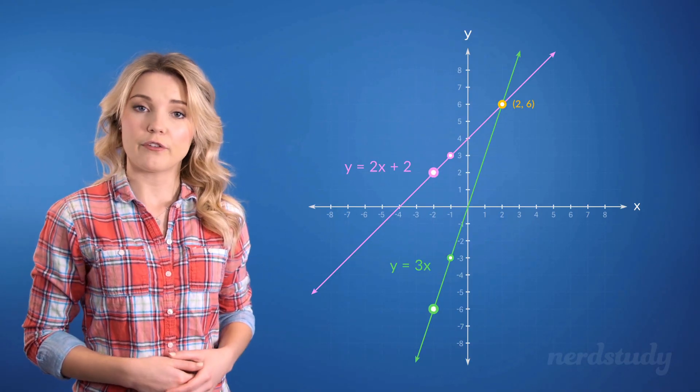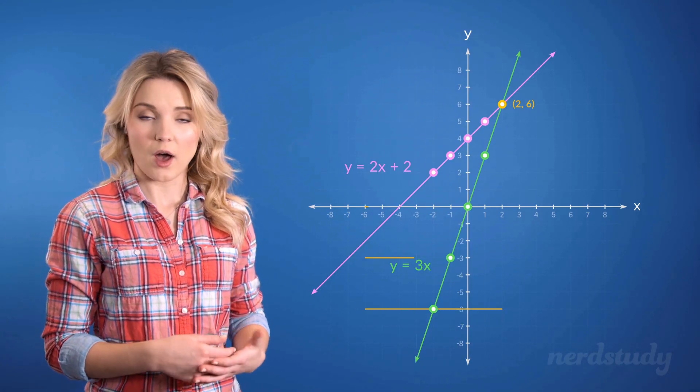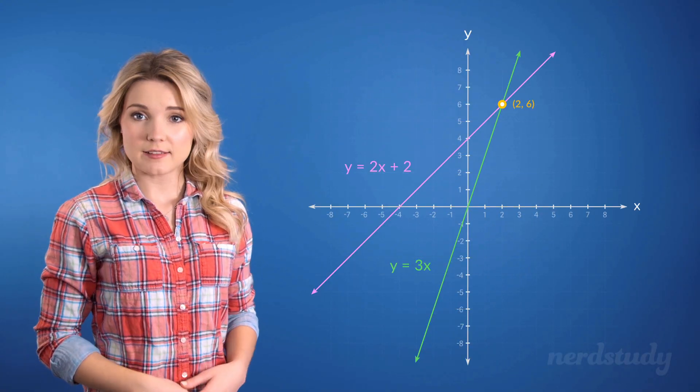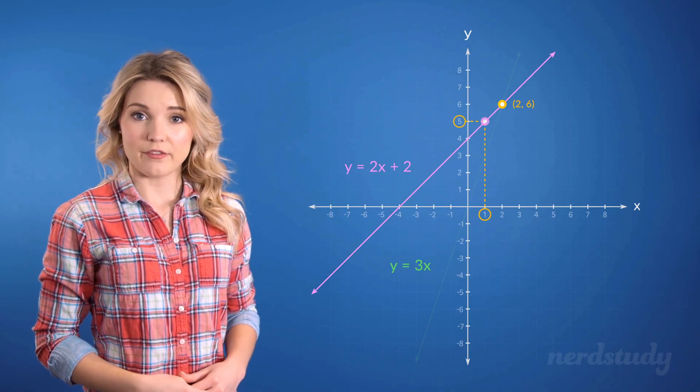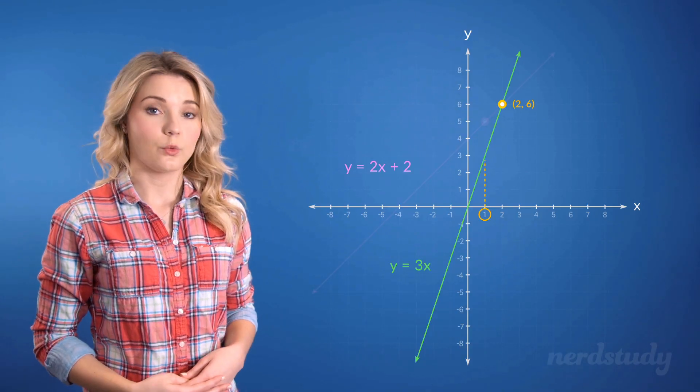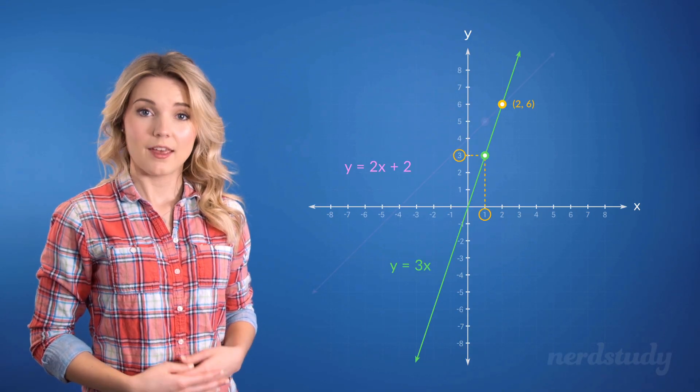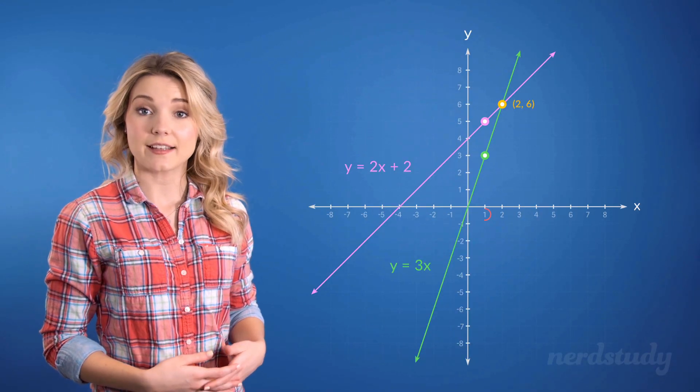And notice how for the other x values both the lines have differing y values. For example, for this line when x is 1, y is 5. But for this line, when x is 1, y is 3. Clearly the two graphs don't share a common point at an x of 1.